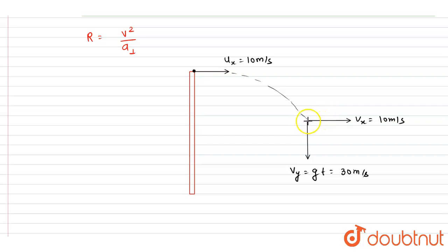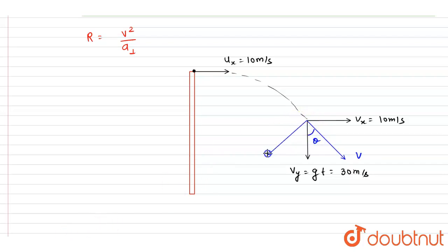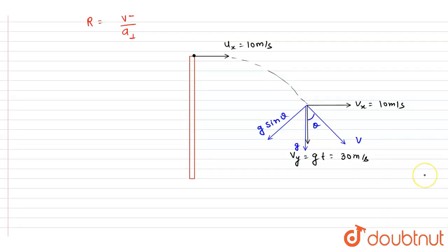As discussed, the acceleration component perpendicular to the velocity is required. The resultant velocity makes an angle theta with the horizontal. The acceleration g acts in the downward direction, and its component perpendicular to the velocity is g·sinθ.